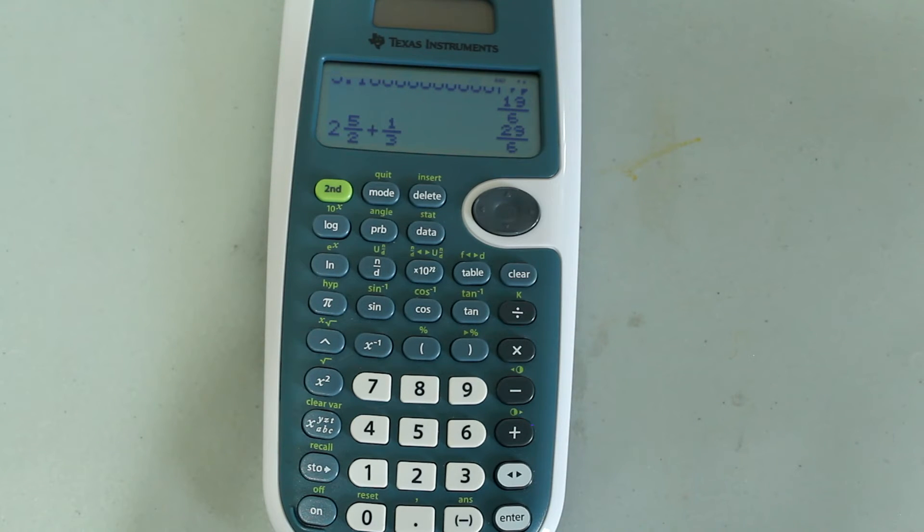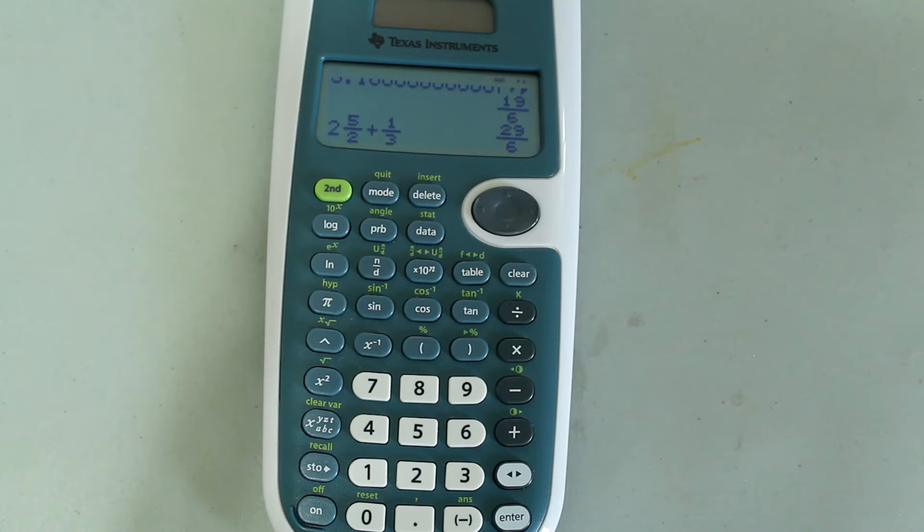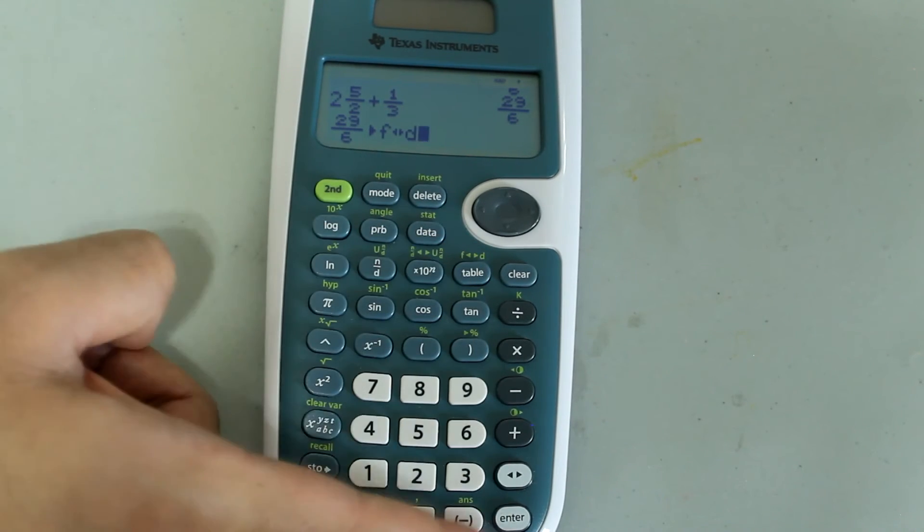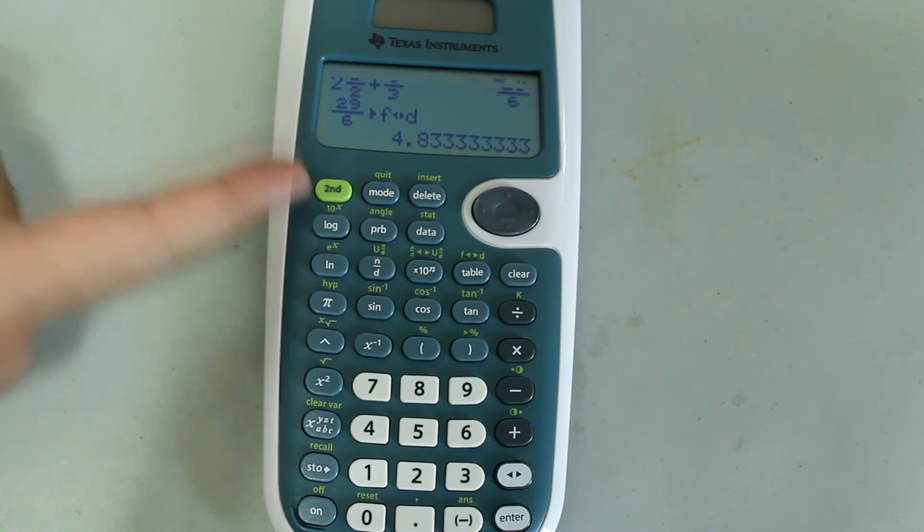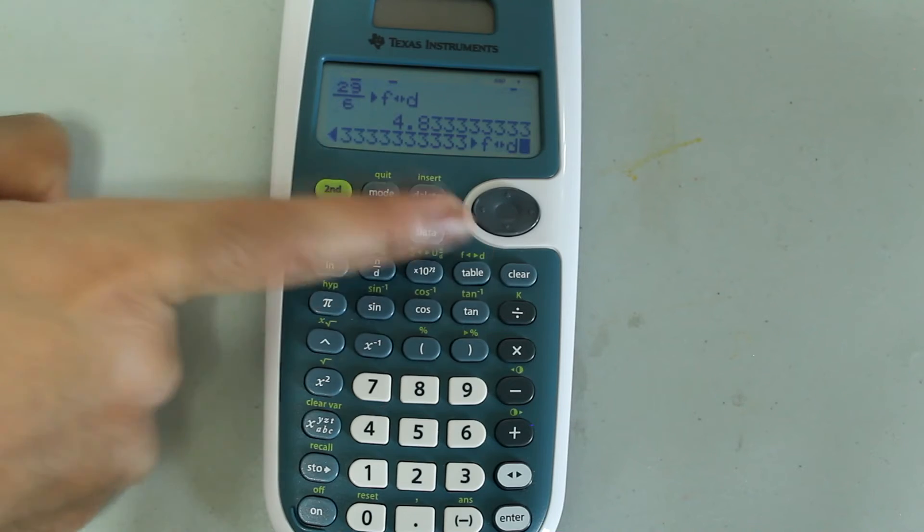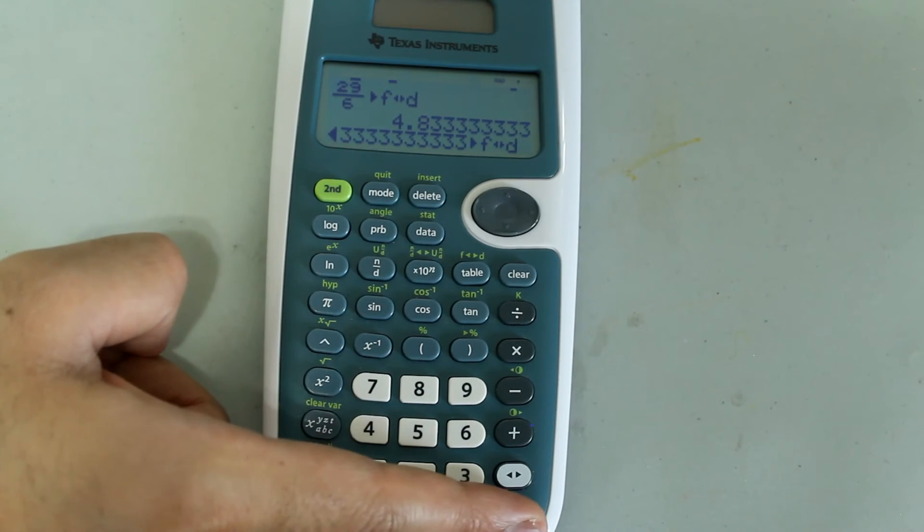And likewise, if I wanted to convert this to decimals, I would do the same thing, press second and table button. And if I wanted to get the fraction back, press second and table button and press enter.